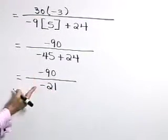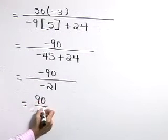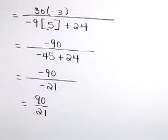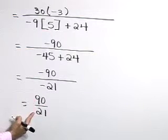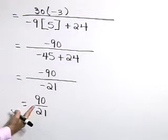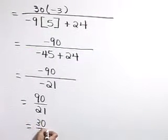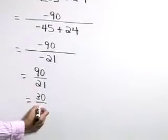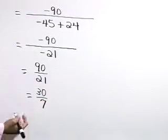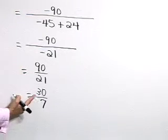Now as we divide two negative numbers, that yields a positive result, 90 over 21. But let's also reduce this. 3 is a common factor of both. 3 goes into 90 30 times and into 21 7 times. So we can write this result as 30 sevenths. That's reduced form.